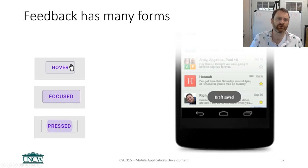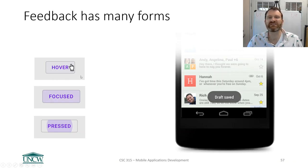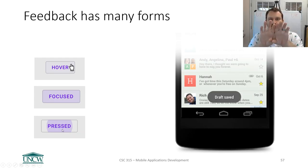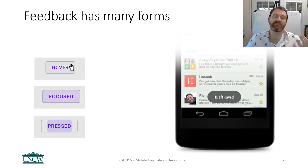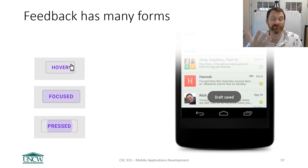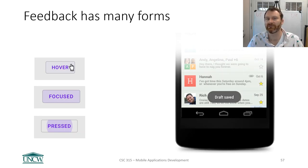Feedback has many different forms. Here are some material design buttons that change subtly based on what the user is doing — hovering changes the background color slightly, selecting but dragging off gives a different color, and pressing gives a ripple bubble that expands. These are subtle feedback that the user has done something. Without feedback, users will sit there mashing the button or get frustrated — especially if your app is downloading something and they're not informed.